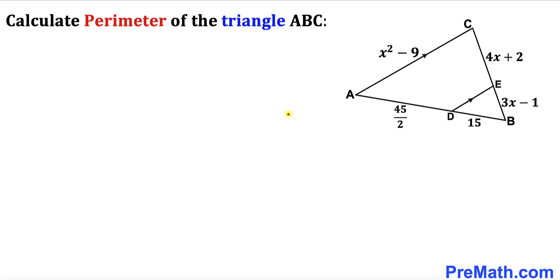Welcome to pre-math. In this video we have got triangle ABC such that line segment AC is parallel to line segment DE, and furthermore this line segment AD is 45 divided by 2.